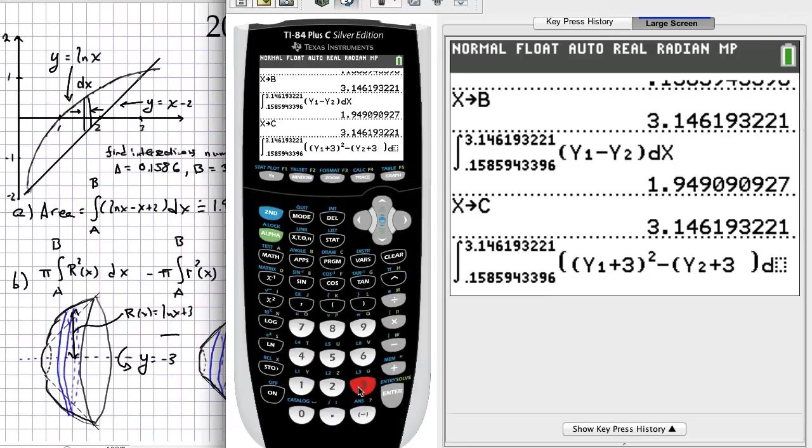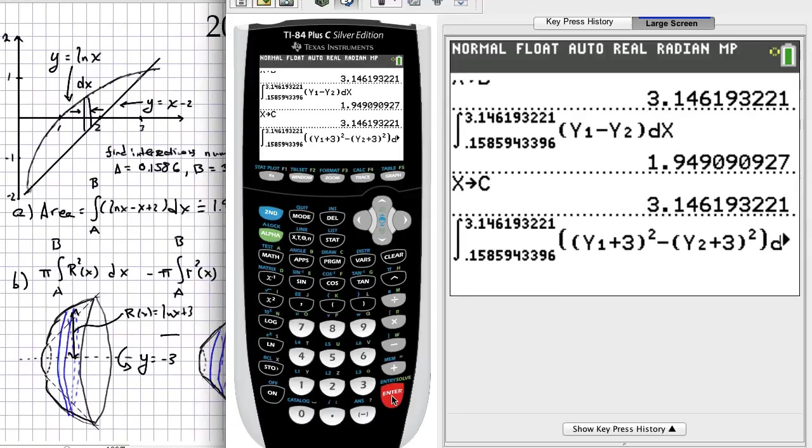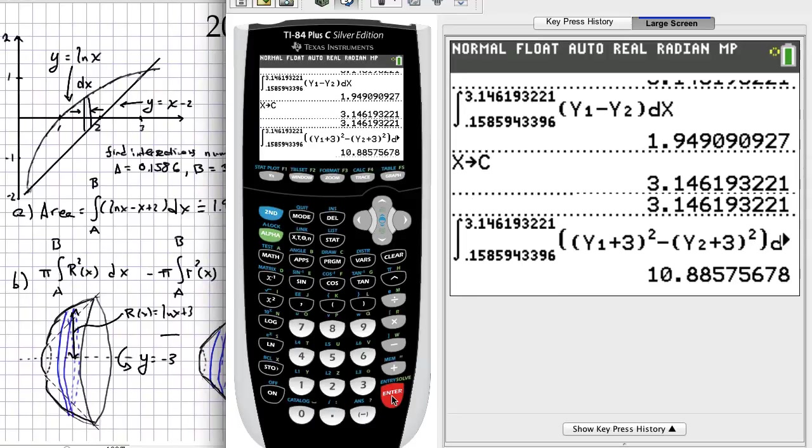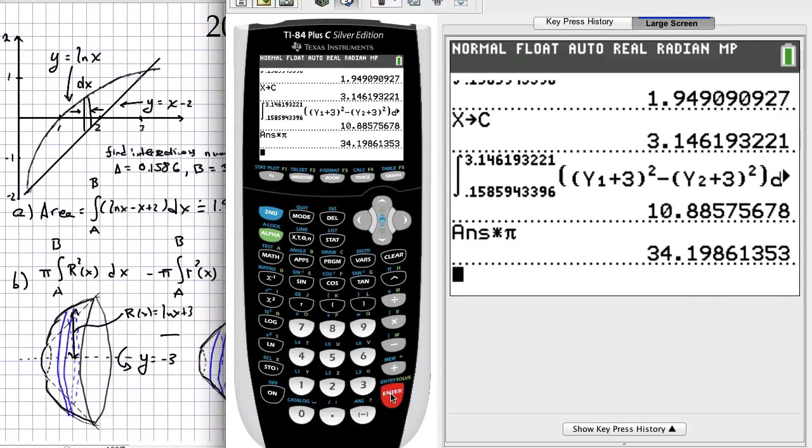The whole thing is done with respect to x. We're going to get a result for this and then multiply that result times pi because we pulled the pi out front. We get 34.1986.